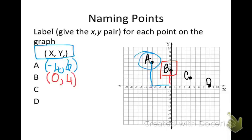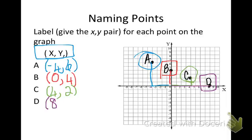Notice that each time I start at the origin. So on point C, starting at the origin, I go to the right 4 and then up 2. Since I went right 4, that's a positive 4; up 2 is a positive 2. And for point D, I go from the origin straight over — that's 8. I don't go up or down at all, so I indicate that with 0.